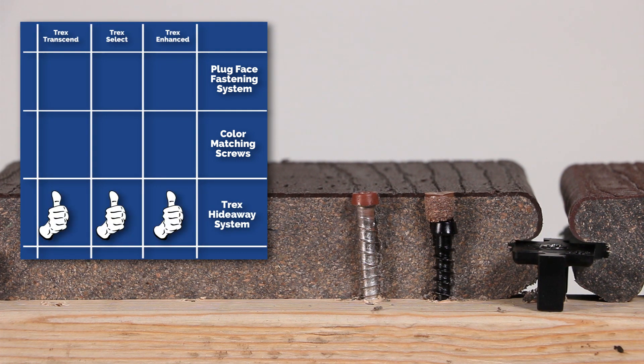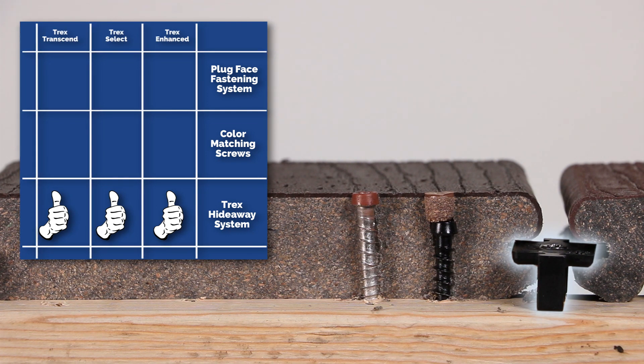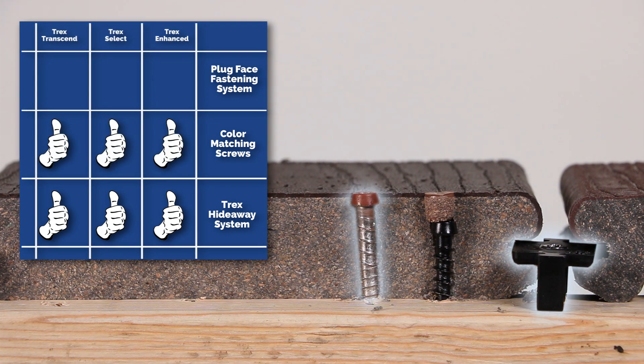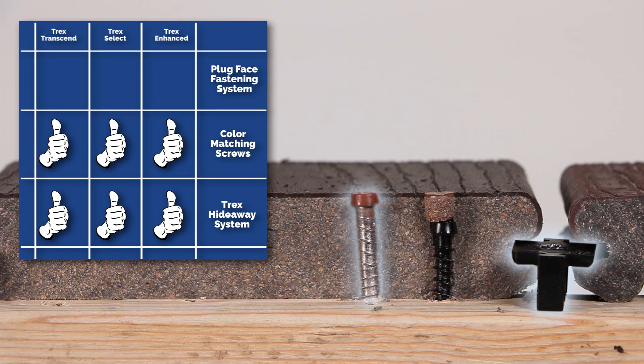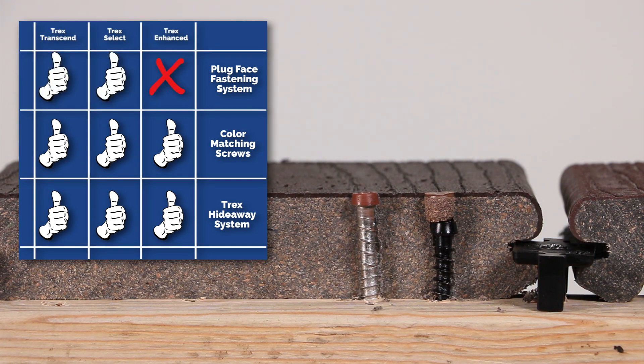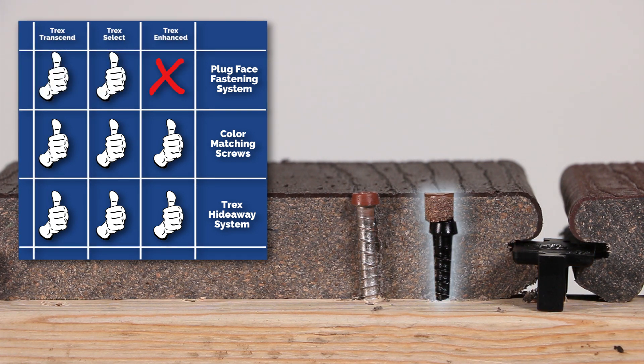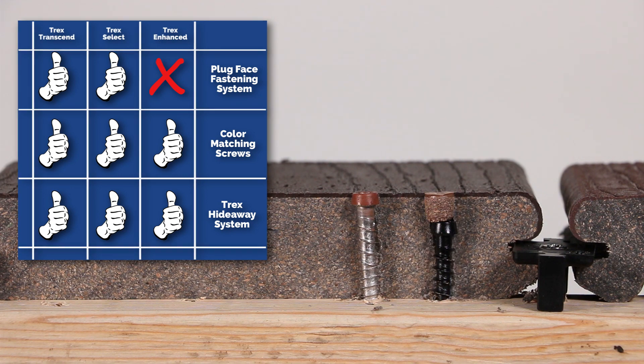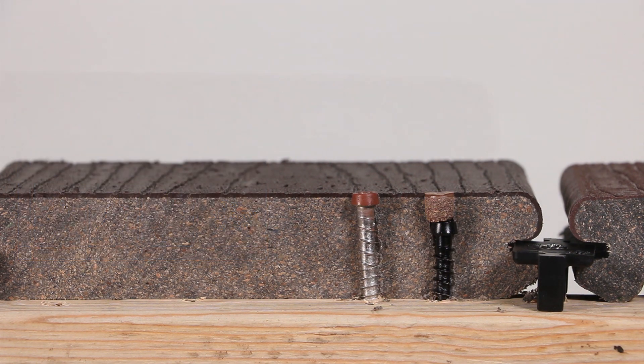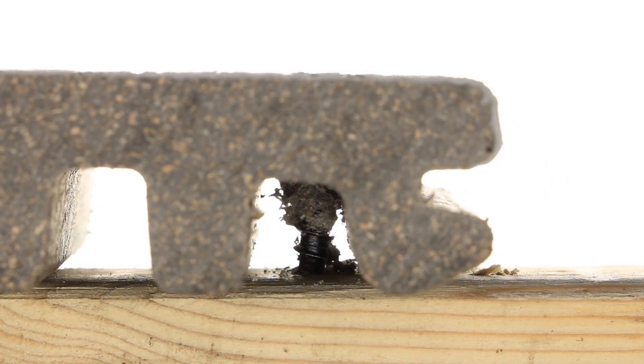You're able to use the Trex Hideaway hidden fastening system as well as the color matching composite screws on any of the Trex decking lines. We don't however recommend using a Pro Plug system with the Trex Enhanced line of decking as the scalloped bottom of the board will not provide enough material for a solid lasting hold.